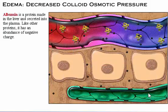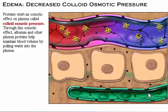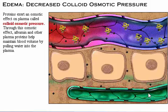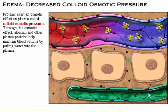Albumin is a protein made in the liver and secreted into the plasma. Like other proteins, it has an abundance of negative charge. Proteins exert an osmotic effect on plasma, which is called colloid osmotic pressure. Through this osmotic effect, albumin and other plasma proteins help maintain blood volume by pulling water into the plasma.